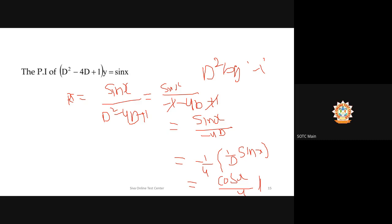Note: when you have 1/D applied to a function, you may add +C from integration. But in the particular integral, we typically don't add the constant — that constant is added when finding the complementary function as C1, C2, C3. Now try the next one: particular integral of (D²-D-2)y = sin(2x).